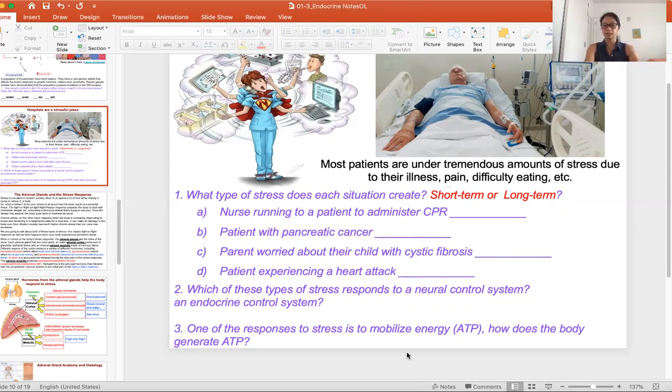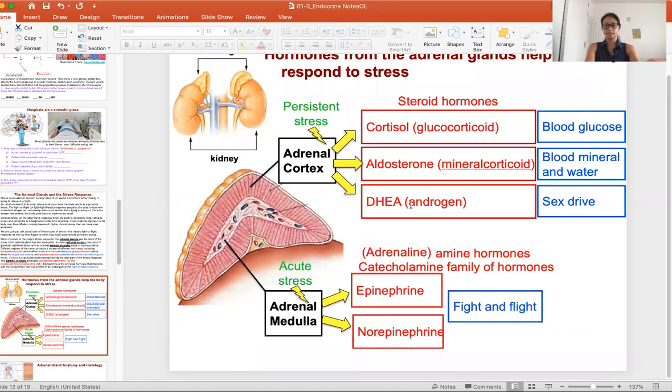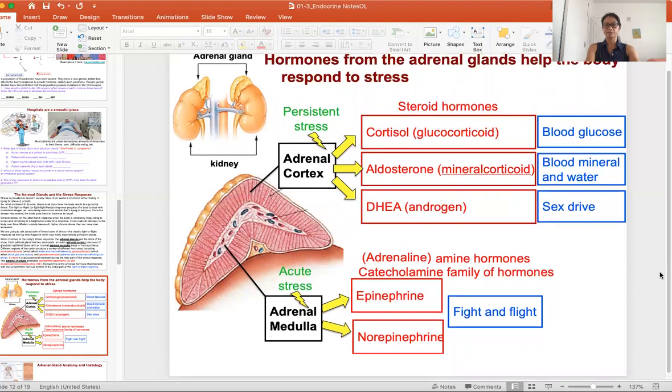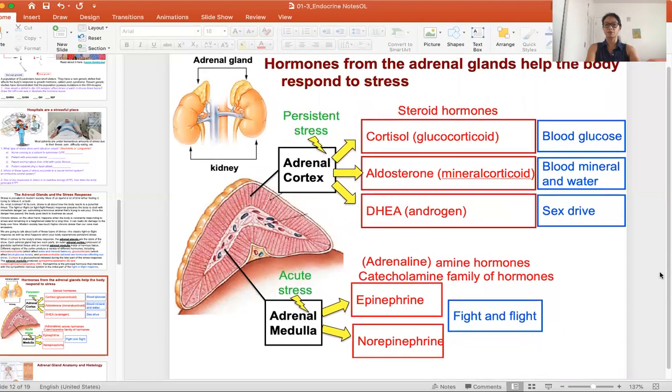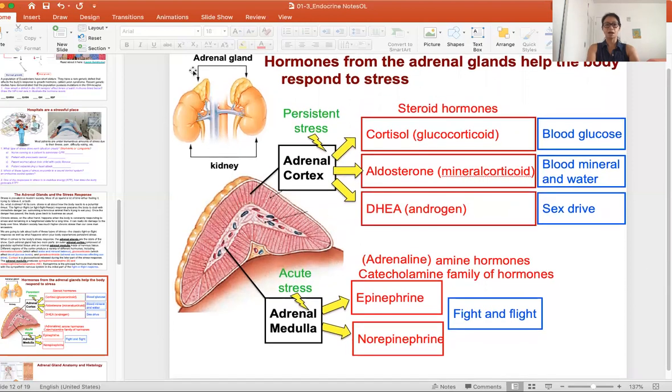This slide looks at the stress pathway by examining the gland responsible for responding to stress. The adrenal gland—'ad' means above, 'renal' means kidneys—sits above your kidney. It's about the size of your thumb and makes a lot of hormones.